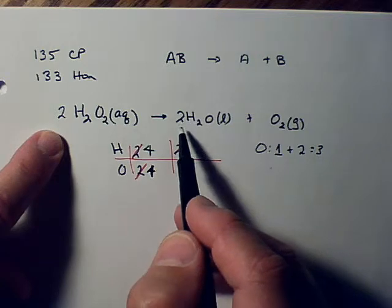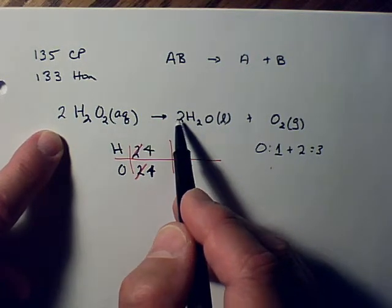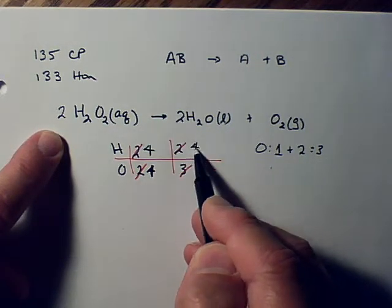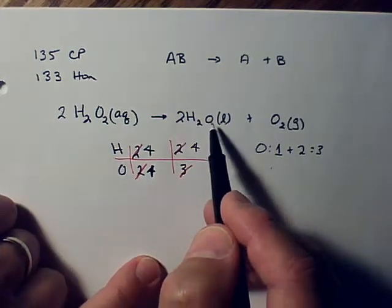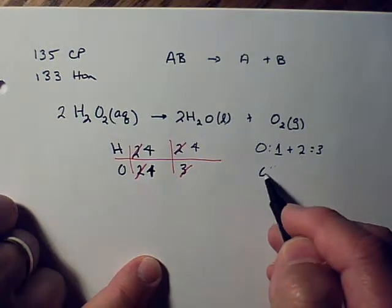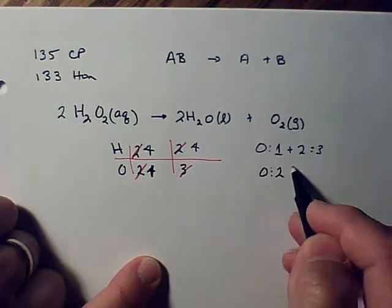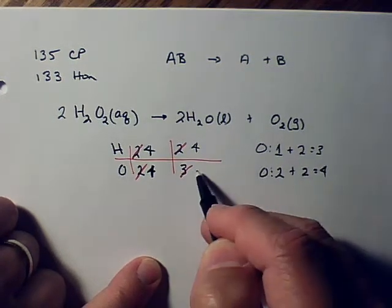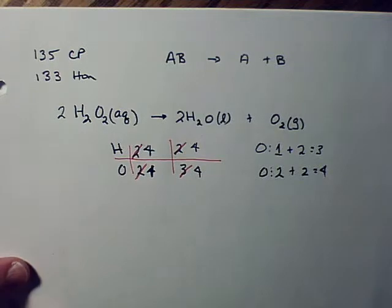Over here, if I have two hydrogens in the formula times two, that's four hydrogens. And two times one oxygen gives us two oxygens plus this two here. So that gives me four oxygens, and everything's balanced.